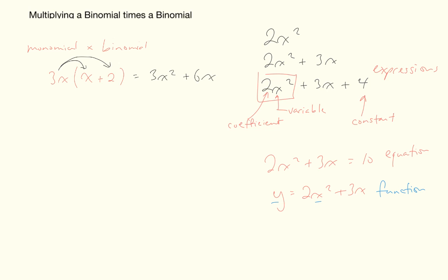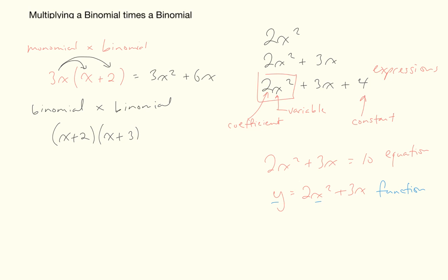Now, multiplying a binomial times a binomial means taking an expression like (x + 2) and multiplying it by another two-term expression like (x + 3). We need to distribute — the first term in the first binomial gets multiplied by both terms in the second expression, and the second term in the first binomial also gets multiplied by both terms. I sometimes call this double distribution — everything gets multiplied by everything.